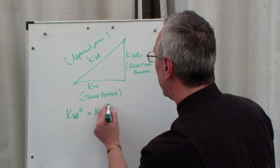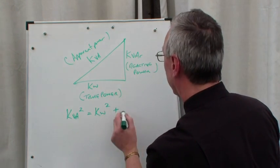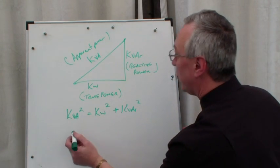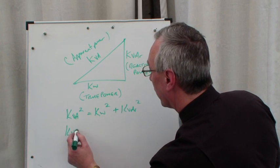kVA, so the hypotenuse value squared, is equal to the kilowatts squared plus the kVAR squared.